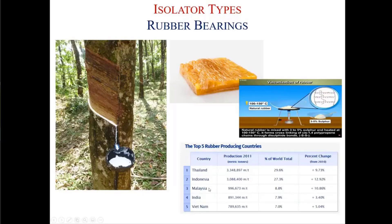The top five rubber-producing countries are shown here — maybe it's one of your countries: Thailand is the main producer, followed by Indonesia, Malaysia, India, and Vietnam. Production mostly depends on these countries. So if you want to produce your own rubber isolator, you have to import the rubber compound from one of the countries that has rubber trees.